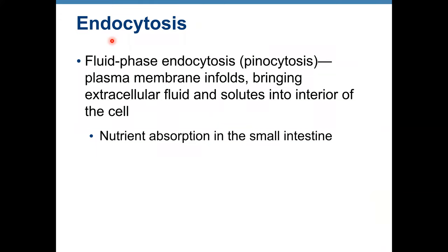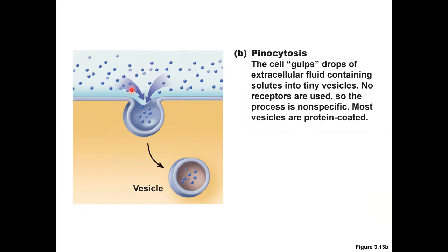Another type of endocytosis is pinocytosis — taking in fluids and whatever is dissolved in those fluids. This process can be found in the small intestine during nutrient absorption. You can see fluid with dissolved particles taken in by vesicles. There is no protein coat or receptors, so this is a very non-specific mechanism. However, the vesicle can be protein-coated as well.